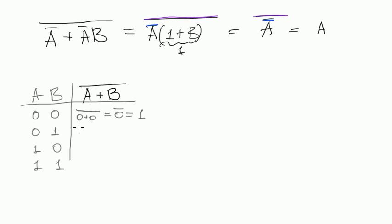Then next one, 0,1. We have 0 plus 1 inside the big negation. That means we have 1. 0 plus 1 is 1 inside negation, which equals to 0.